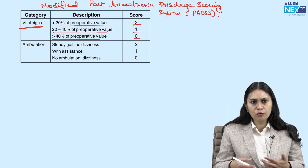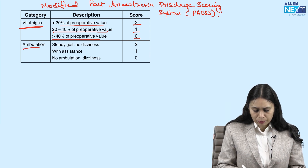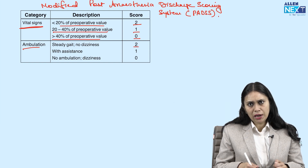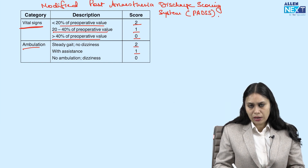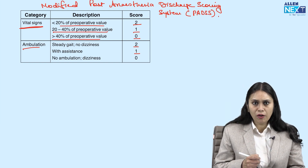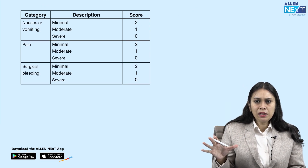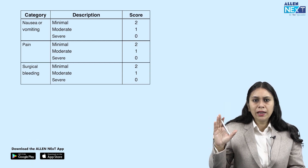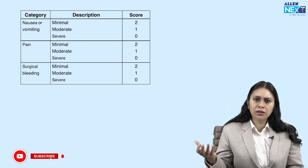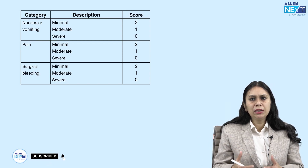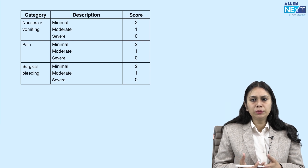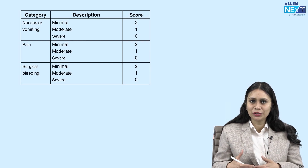For ambulation: if the patient can move with a steady gait, it is 2. If the patient can move with assistance, it is 1. If the patient becomes dizzy on standing with no ambulation, it is 0. For nausea and vomiting: minimal is 2, moderate is 1, and severe is 0. For pain: minimal is 2, moderate is 1, and severe is 0. For surgical bleeding: minimal is 2, moderate is 1, and severe is 0.